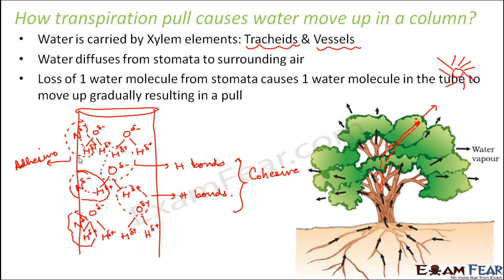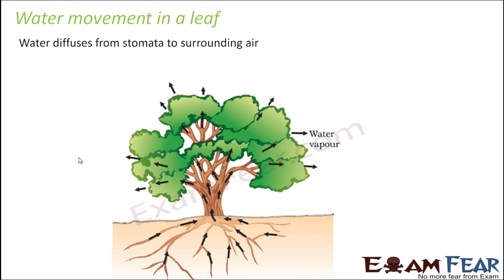Is it clear how transpiration pull can make water move vertically upward against gravitational pull up to very high distances? We have now discussed how water moves up through the xylem. The next question is how water diffuses from the stomata to the surrounding air — how water molecules move inside the leaf. Since we have already studied the anatomy of flowering plants, we are aware of the internal structure of a root, leaf, and stem, which will help us understand this.